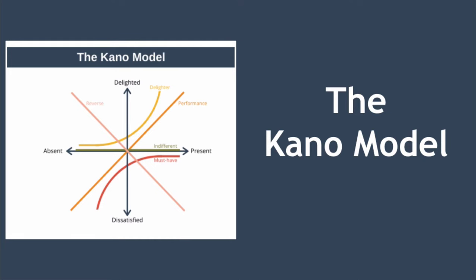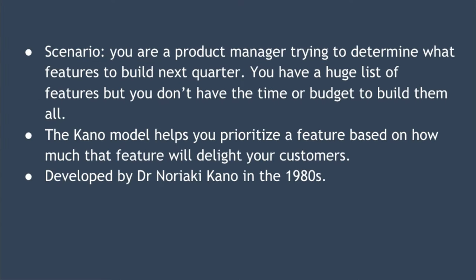Hello and welcome to today's lesson where we're looking at the Kano model. Imagine this scenario: you're the product manager for a software tool and you're trying to determine what features to build next quarter. You have a huge list of features you'd like to build but you don't have the time or budget to build all of them. So you need to decide what features you're going to prioritize — but how?